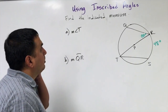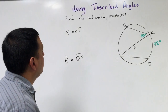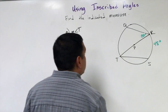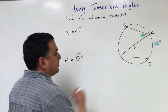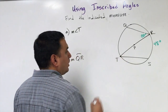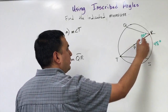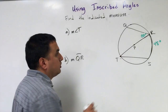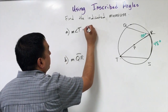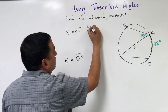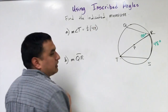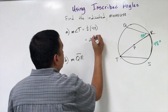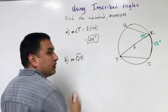On this example, find the indicated measure. The first problem says find the measure of angle T. If I look at angle T and follow it down, the arc is from R to S. So the measure of angle T equals one half of 48, because that's the intercepted arc. Half of 48 is 24, so the measure of angle T is 24 degrees.